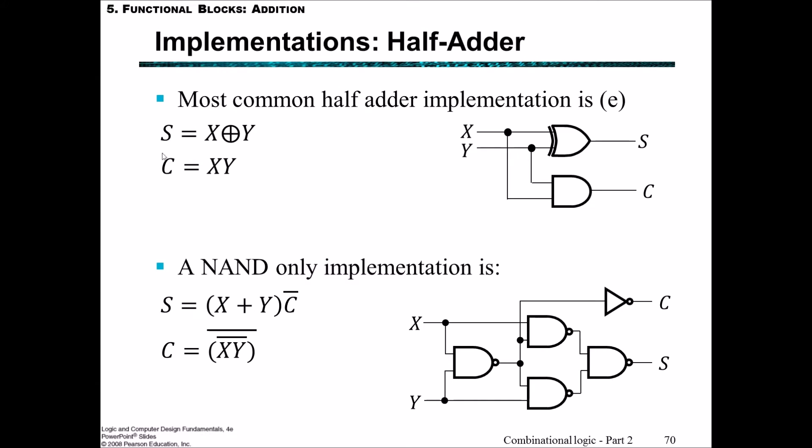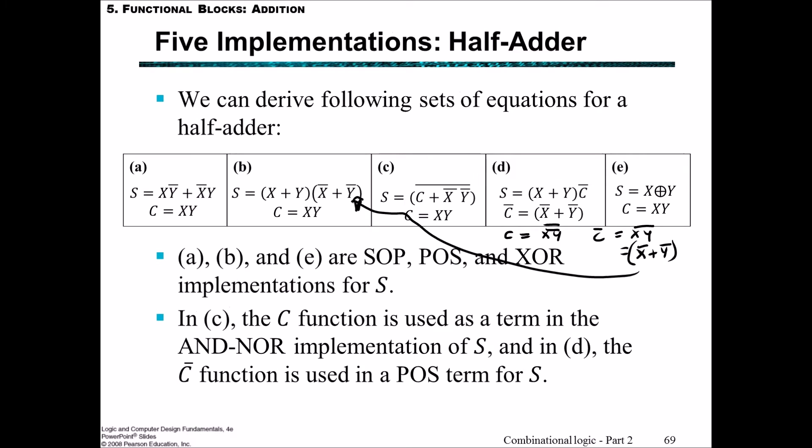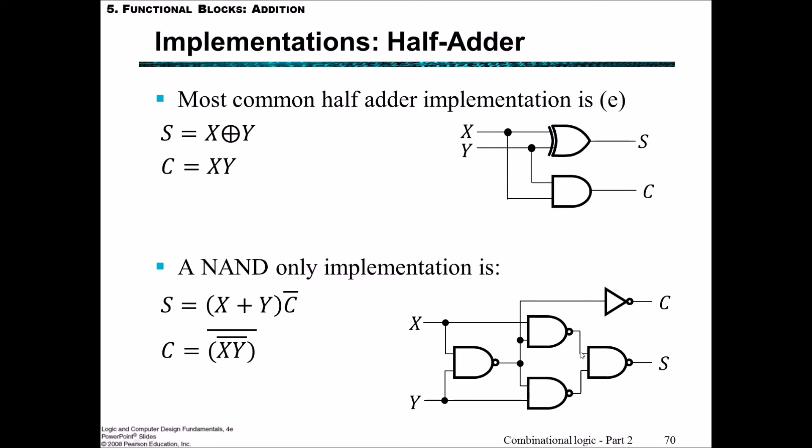Drawn up, this is our XOR gate: X ⊕ Y giving S, and C being simply X AND Y. We can also use what we got from (d) to do a NAND-only implementation, remembering that the inverter is just a NAND gate with a single input. Although C itself doesn't look like it's being fed back into the circuit, NOT C is actually here and is being fed in, which is the output of this NAND gate—the inversion of X AND Y.